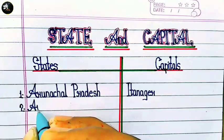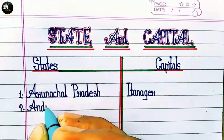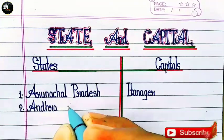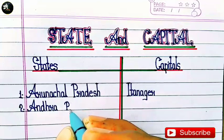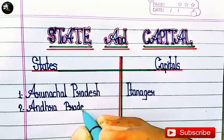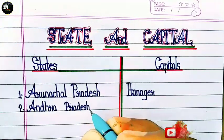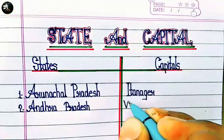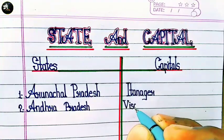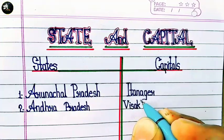So friends, our first state is Arunachal Pradesh and their capital is Itanagar. And the second state is Andhra Pradesh and their capitals are Visakhapatnam, Amaravati, and Kurnool.